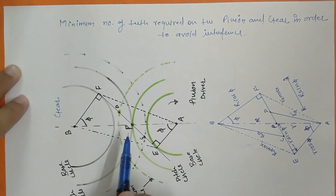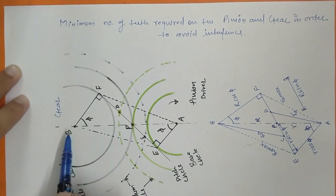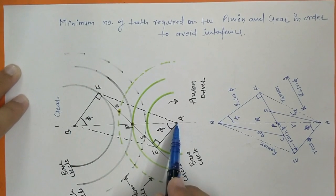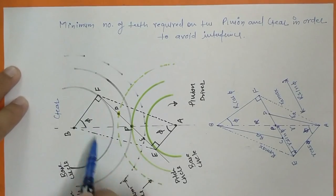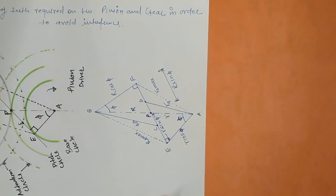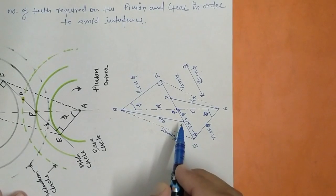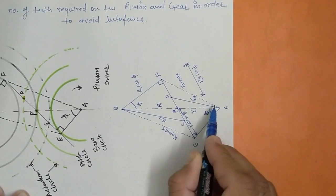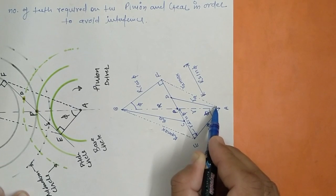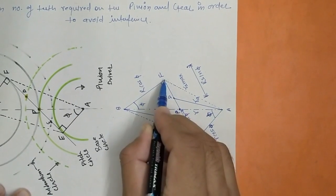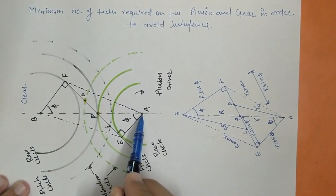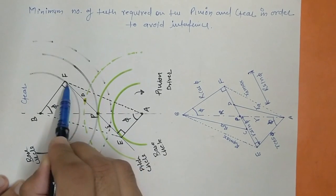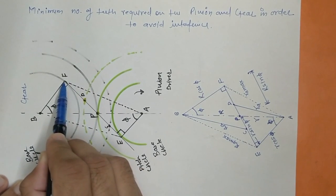This EF is the pressure line, P is the pitch point, this is the center of the gear, and A is the center of the pinion. This geometry can be represented in triangle form. AB is the center line. The maximum addendum for the pinion can be AF. If we keep increasing the addendum circle diameter of the pinion and it surpasses point F, there would be interference.